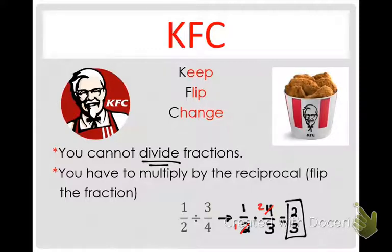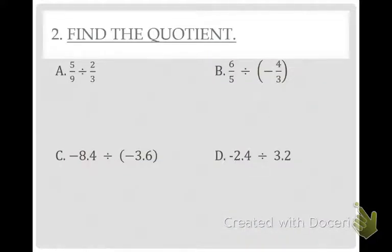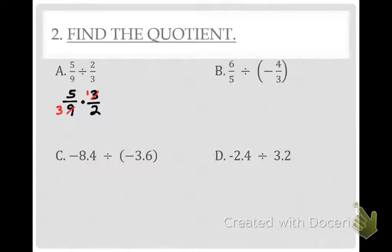Remember, you have to use KFC anytime you're dividing fractions. Nikki, go ahead and do the first one using the KFC method. Bring down 5 over 9, change the divide sign to multiply, flip the 3 over 2. Then cross-reduce 3 and 9 — change the 3 to 1 and the 9 to 3. The answer is 5 sixths. 5 sixths is correct.